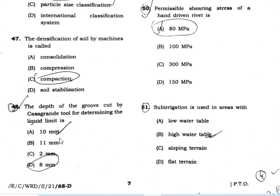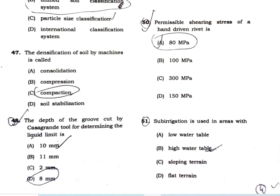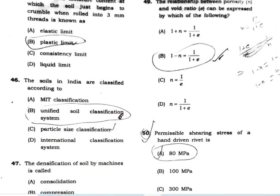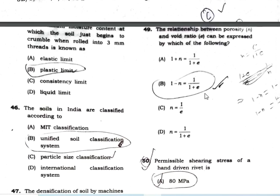In the Casagrande apparatus used for determining the liquid limit, the depth of the groove cut is 10 mm. The relationship between porosity (n) and void ratio (e) is: n = e / (1 + e).